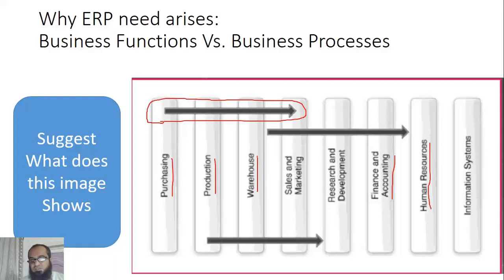You see the black line cutting across many departments — whenever we talk of a business process, whether sales or purchase, a process always cuts through many departments. If we want one complete software that takes care of purchases, we need to give access to end users like faculty members, the purchasing department managing procurement, the admin department approving it, and the accounts and finance department eventually paying the vendor. This is the idea behind an ERP.